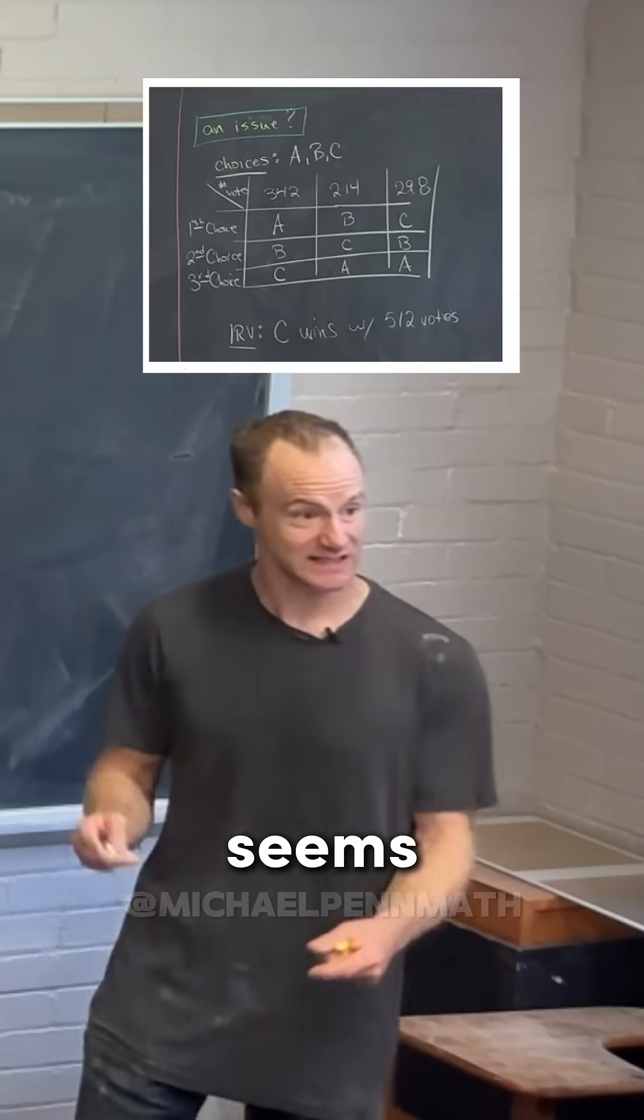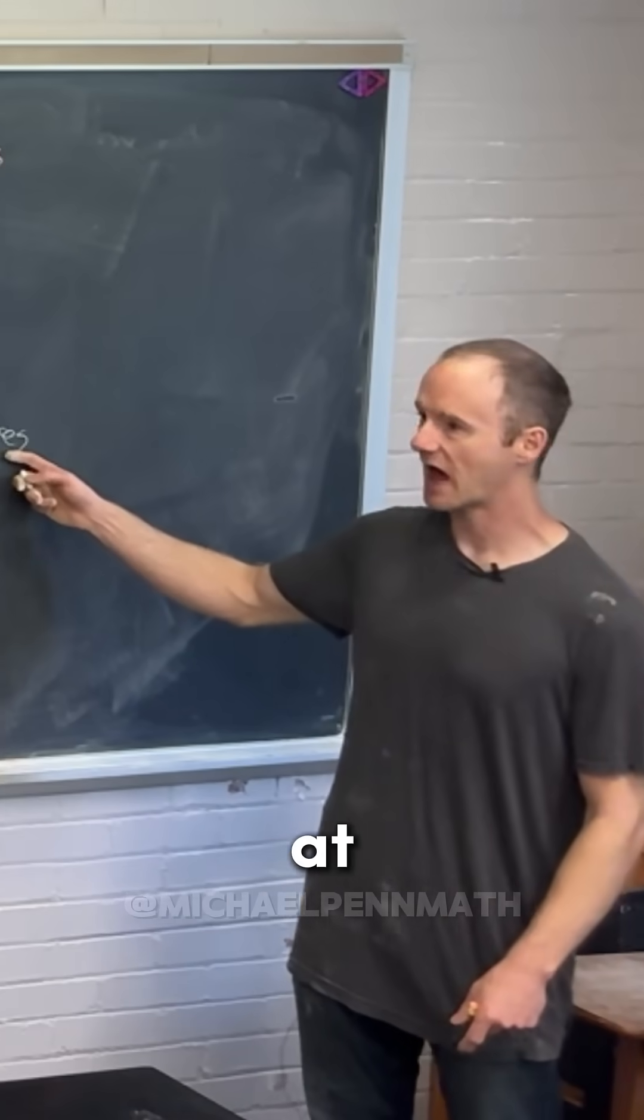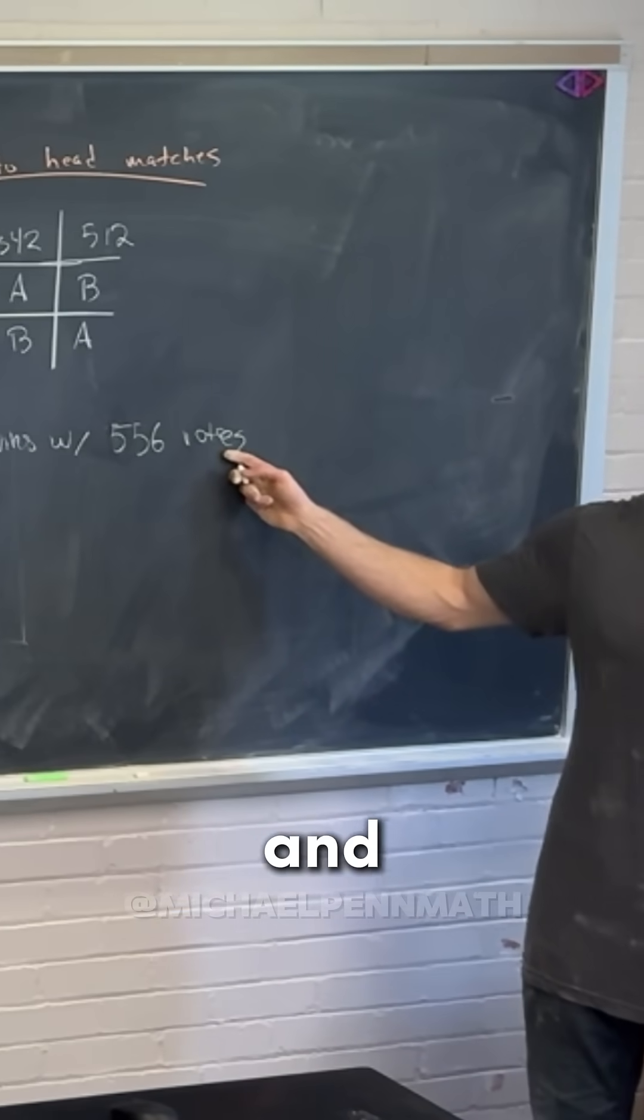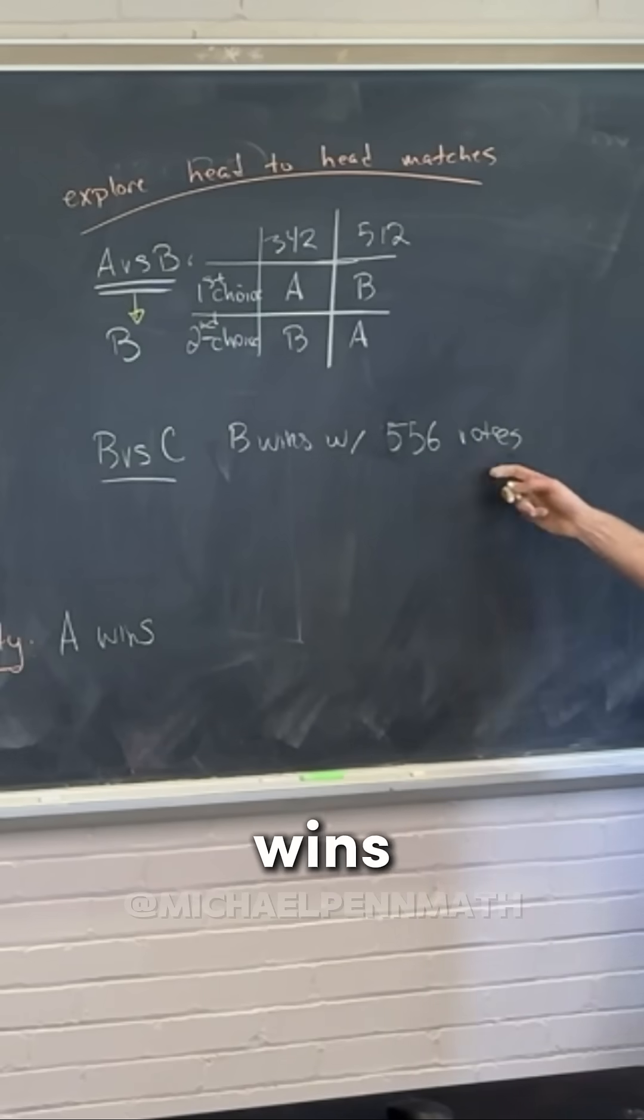Instant runoff voting seems like a reasonable method. C wins if we do that. Looking at head-to-head matches and seeing who wins the most head-to-head matches seems reasonable also. Well, B wins with that.